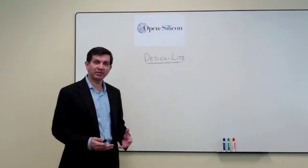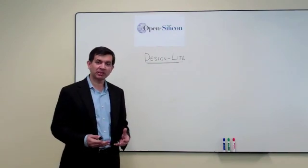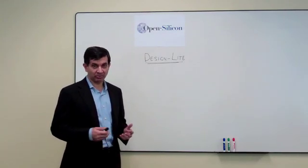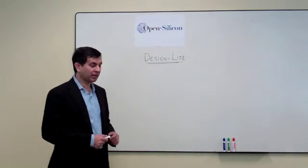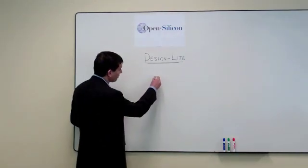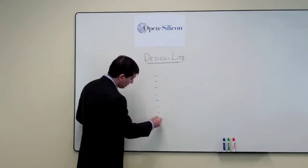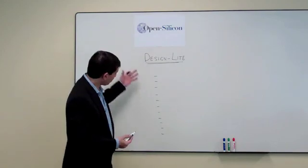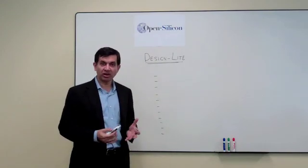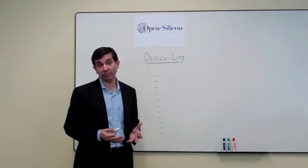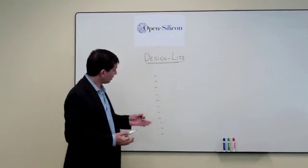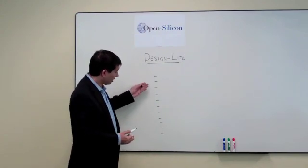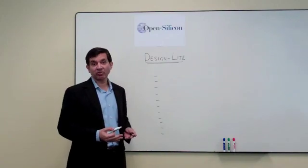Let's talk about how companies decide to do chip development projects. Typically they go through a process known as the zero base budget project process. All the different projects in the company are put on a scale from top to bottom. The projects on top are the most valuable to the company and should be done first. After such prioritization has been done, the company decides at what point they cannot fund these projects.